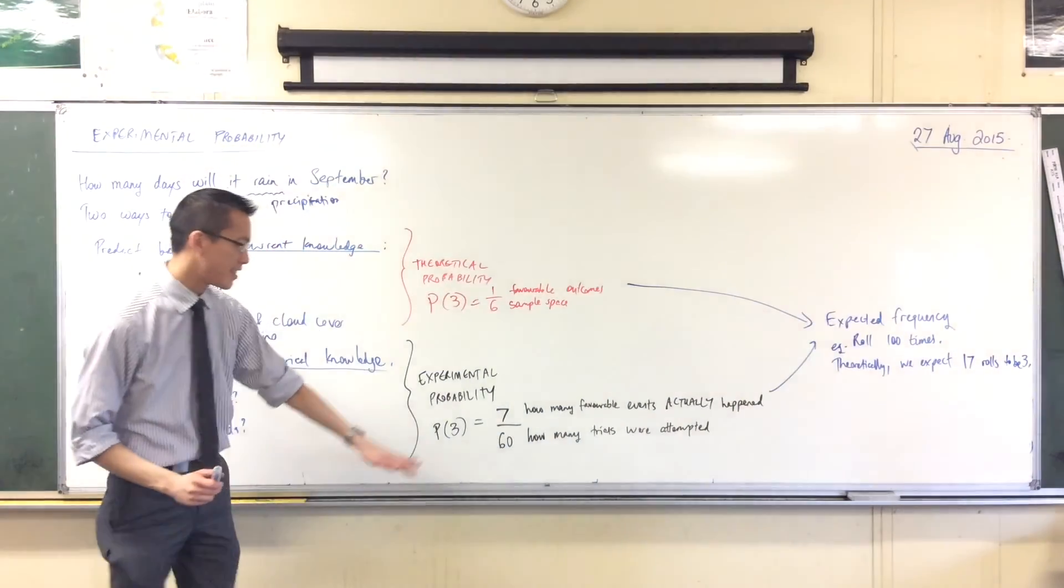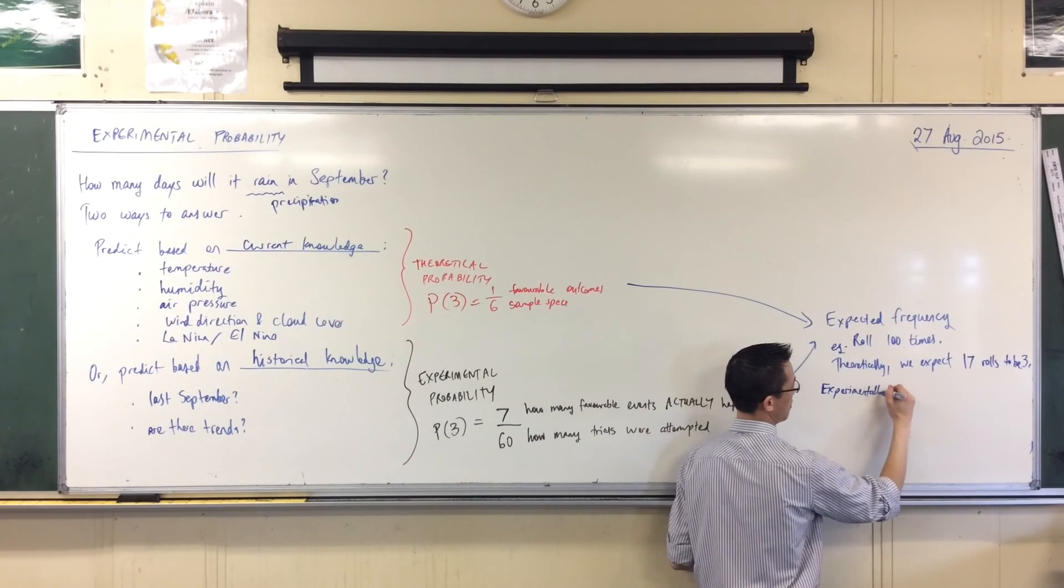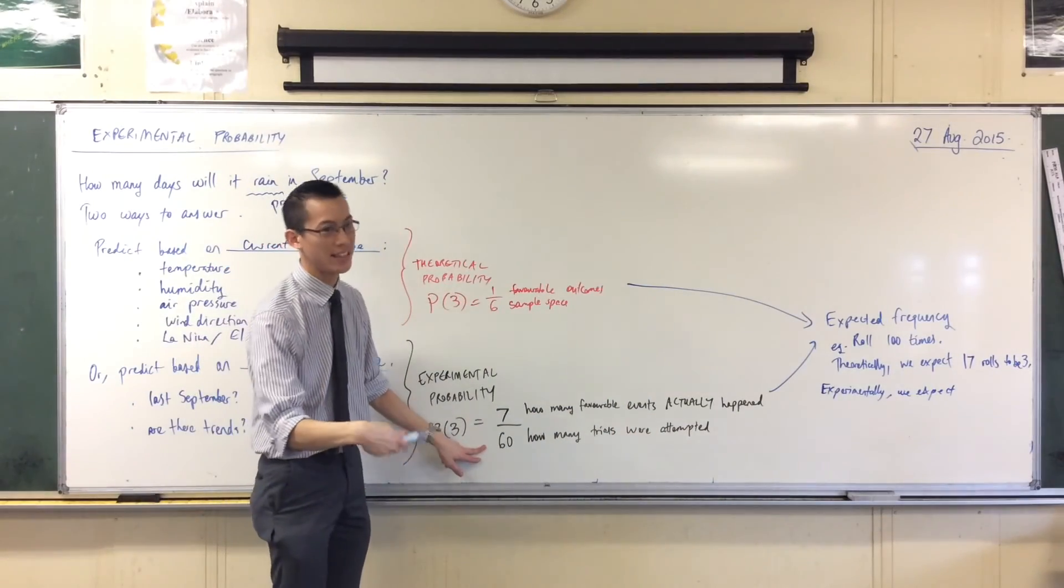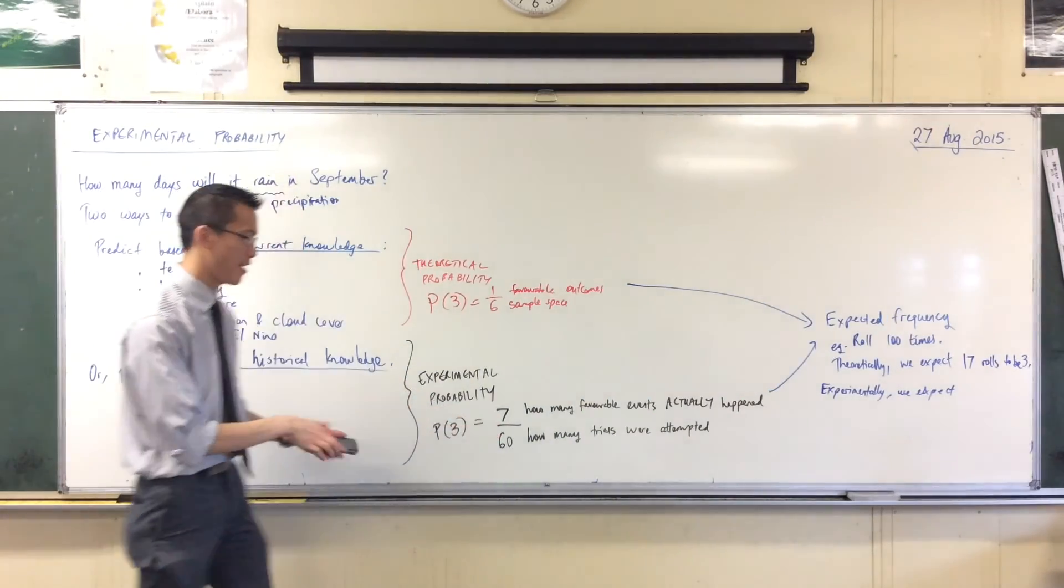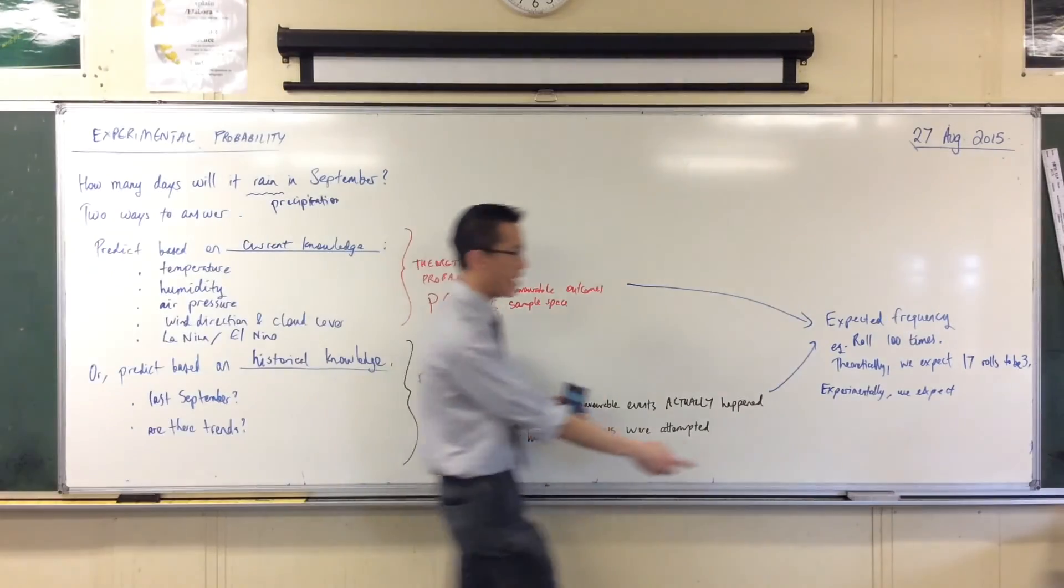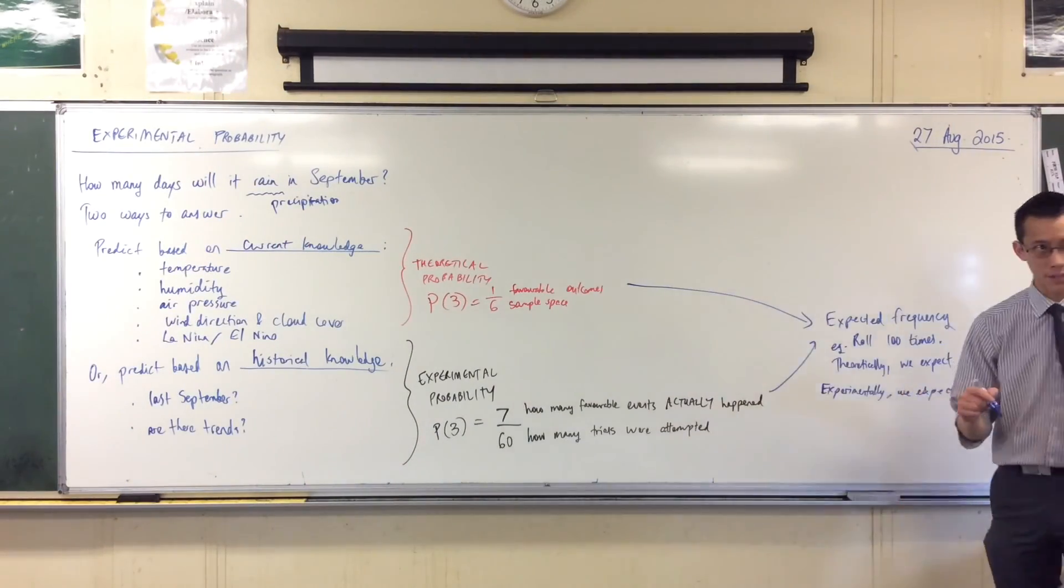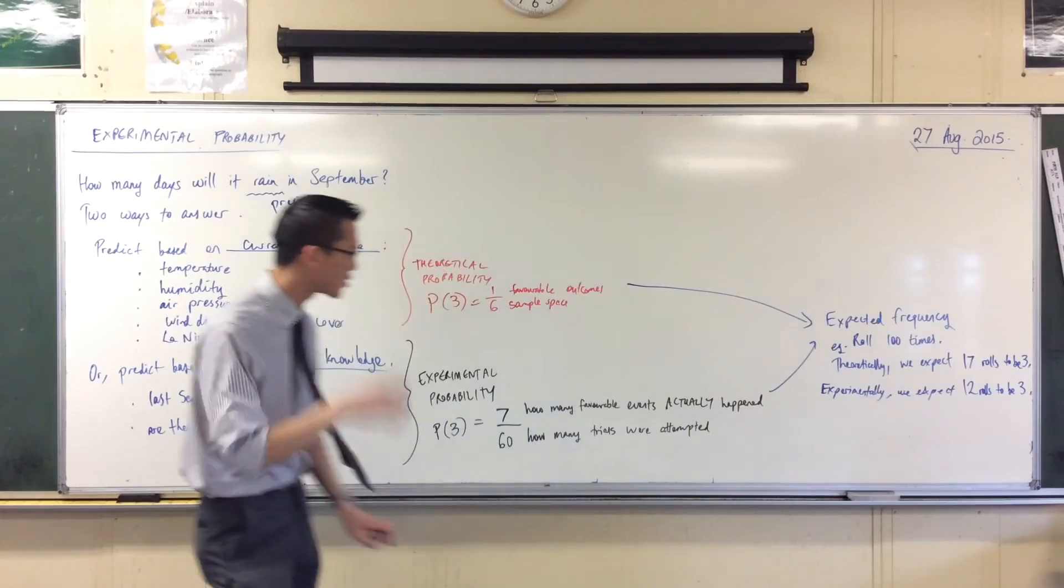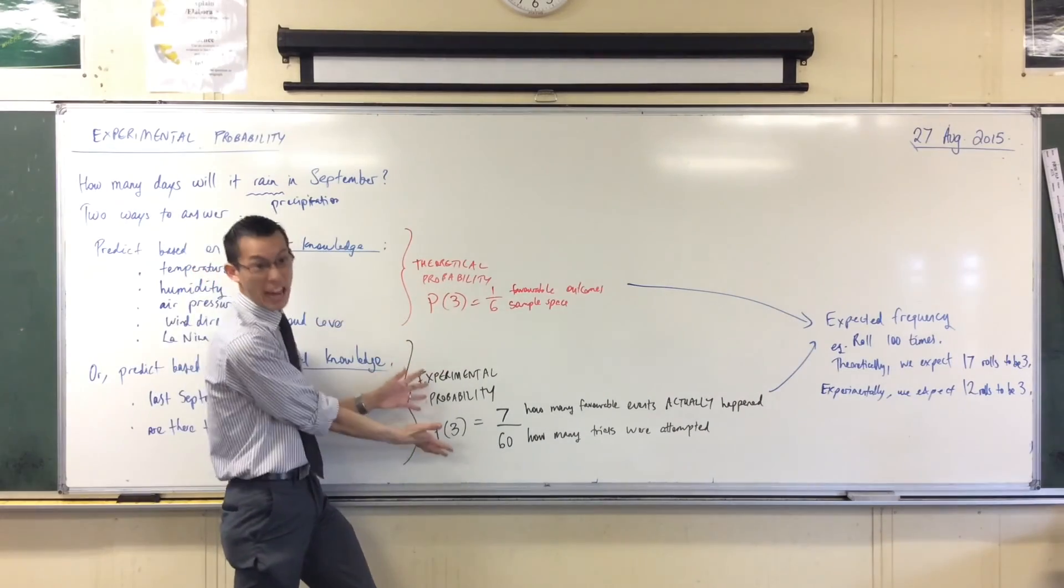But we did the experiment, and something else happened. So I would say instead, experimentally we expect not a sixth of the rolls but seven-sixtieths of the rolls. I'm going to take my calculator because these are such awkward numbers. I'll go seven over 60 and multiply that by my 100 rolls, and that gives me 11.666. If it's 11.666, it's closer to 12 than 11. So I expect this many, which is less, because that's what the experiment told me.